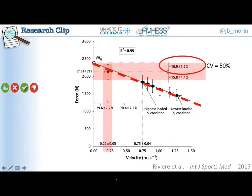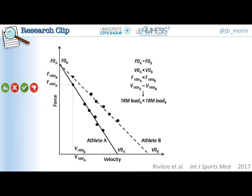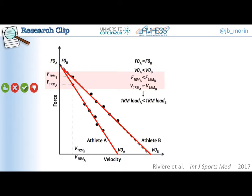Here is a typical example of two of the athletes tested. They have exactly the same F0 value — their theoretical maximum force as extrapolated from the relationship is equal. But because they have very different force-velocity profiles, the force-velocity profile of athlete B is much more velocity-oriented than athlete A. Because of that, the force during their one RM push — their maximum force experimentally obtained — is different. The maximum force during the one RM is higher in athlete B than in athlete A. However, their velocity during the one RM is equal.